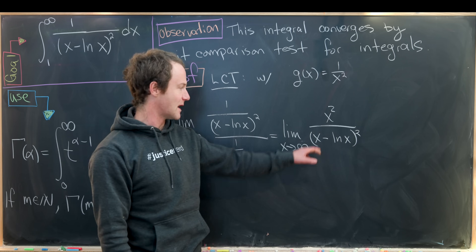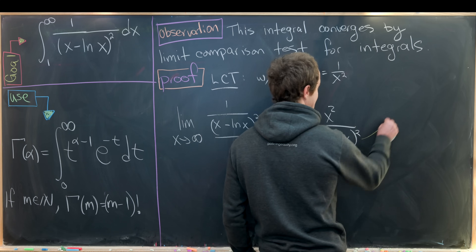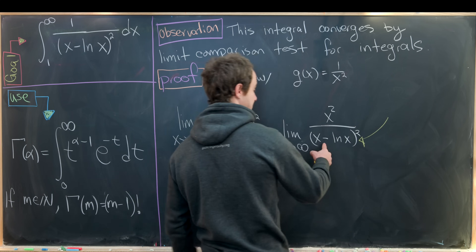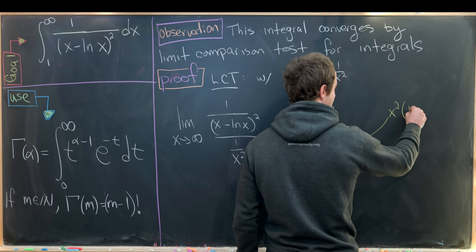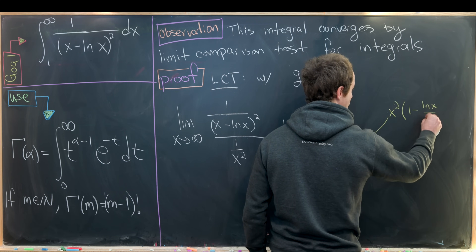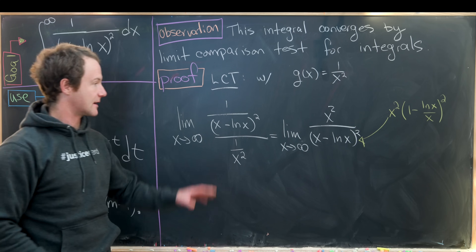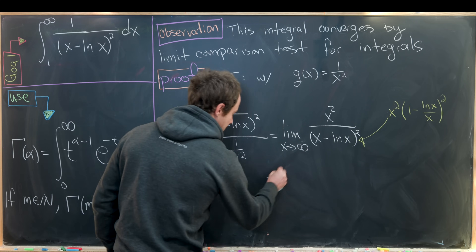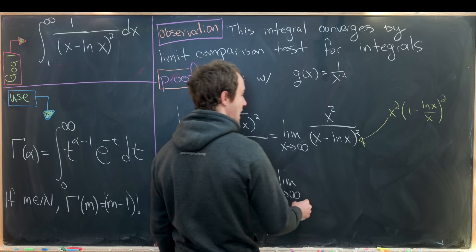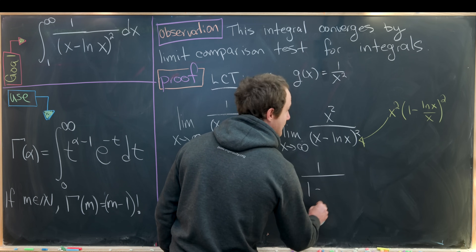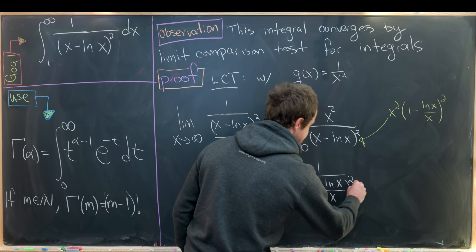We can factor x² out of the denominator to cancel with the numerator, leaving the limit as x goes to infinity of 1 over (1 minus ln(x)/x) squared.